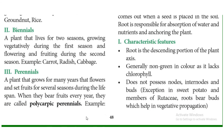Perennials are plants that grow for many years. Every year they produce flowers and fruits for several seasons during their lifespan. Examples include coconut and mango. These are called polycarpic perennials — plants that grow for many years and produce flowers and fruits every year.